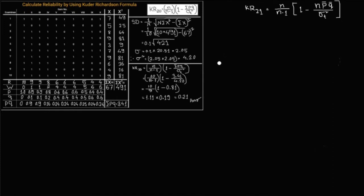Step 1: Calculate mean of total score. So mt equals sum of capital X by capital N. Sum of X is 67 and total number of examinee is 10. So it equals 6.7.